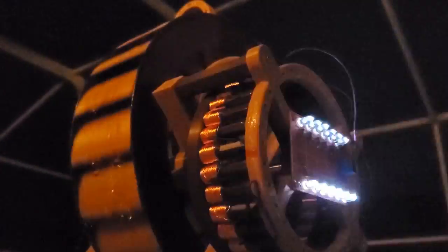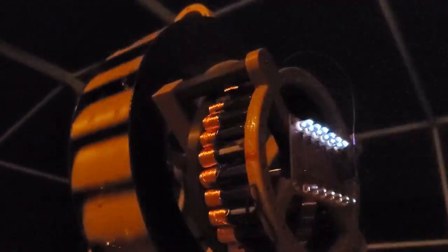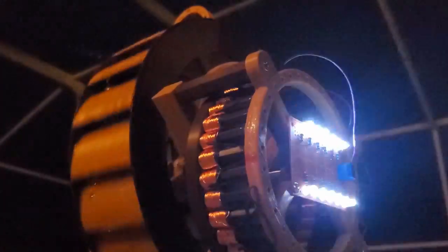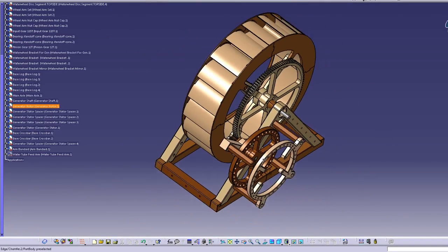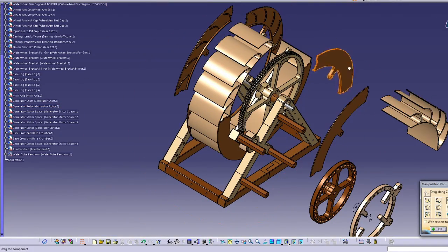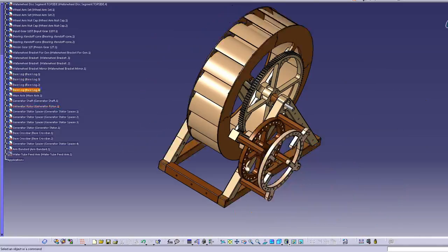In this video I'm going to show how I built a miniature water wheel that generates electricity from just a tiny amount of water flow. The water wheel has a 12 inch diameter and it drives a generator using a 10 to 1 gear. The generator is built with fridge magnets and 30 gauge copper wire.